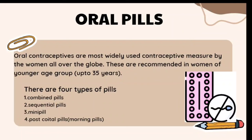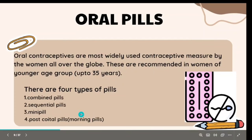Next is oral pills, one of the chemical methods of female contraception — most widely used, especially among younger age groups. In general, oral contraceptives are synthetic preparations of estrogen and progesterone. When taken orally, the plasma concentration of these hormones rises, sending negative feedback to the anterior pituitary, thus inhibiting the release of FSH and LH, and thereby inhibiting ovulation. There are basically four types: combined pills, sequential pills, mini pills, and post-coital pills.